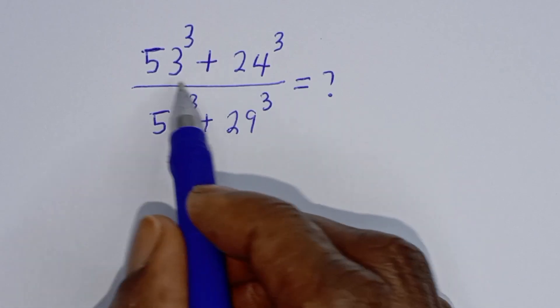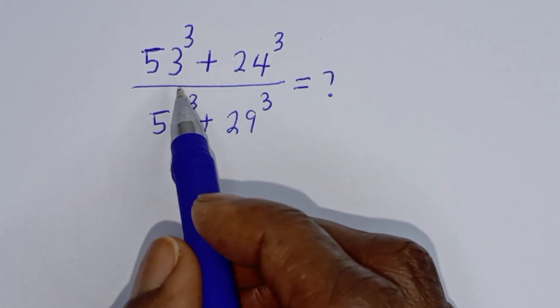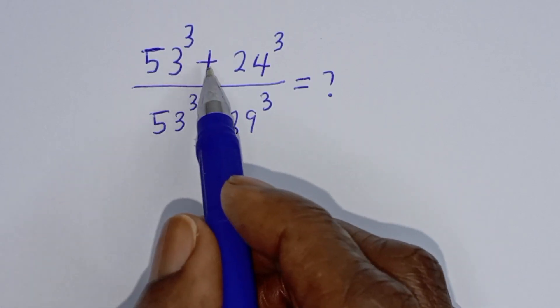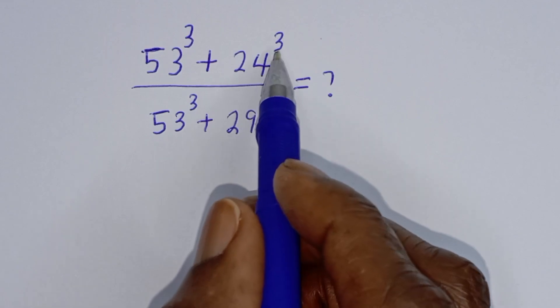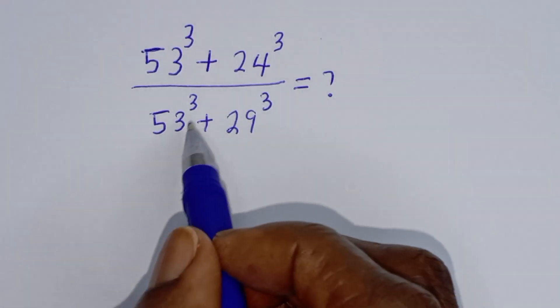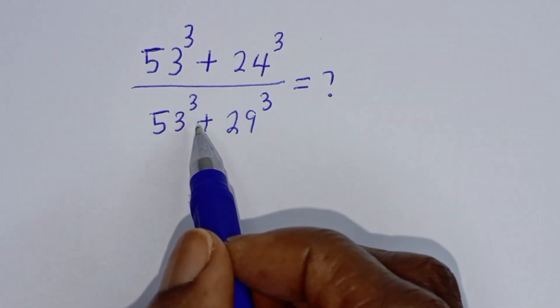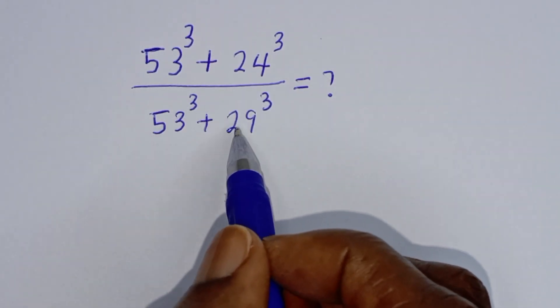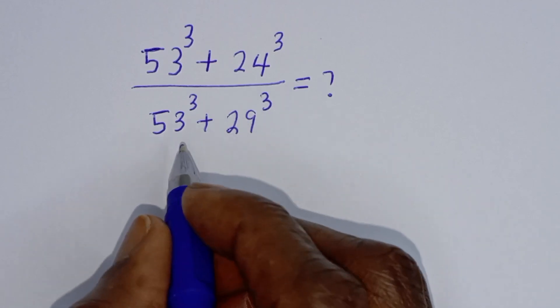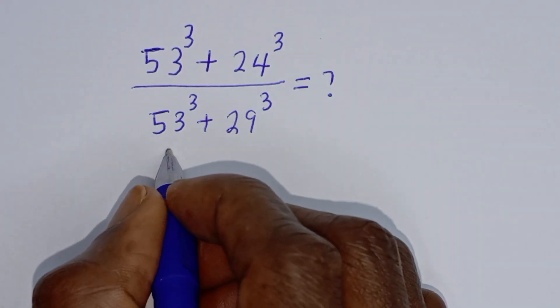Hello, how to simplify this nice math problem? 52 raised to power 3 plus 24 raised to power 3, divided by 53 raised to power 3 plus 29 raised to power 3. This is equal to what solution?